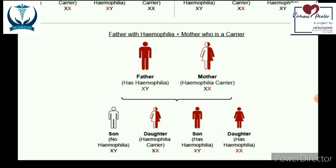In this cross, one daughter may be a carrier and another may express the disease — neither daughter is completely normal because both receive the mutated X from their father. This means only 25% of children would be normal. Therefore answer 2 (50% of children would be normal) and answer 5 (all sons hemophilic) are both rejected.